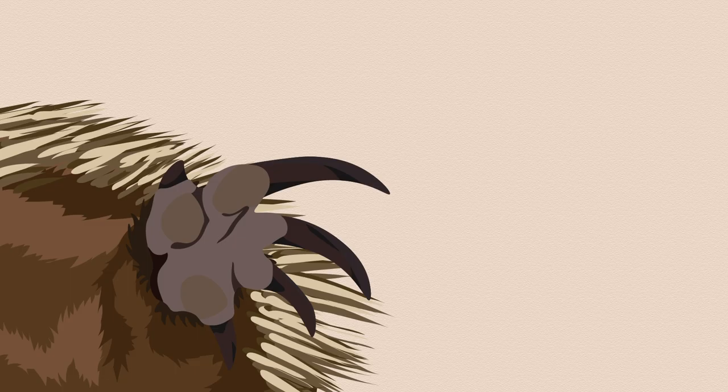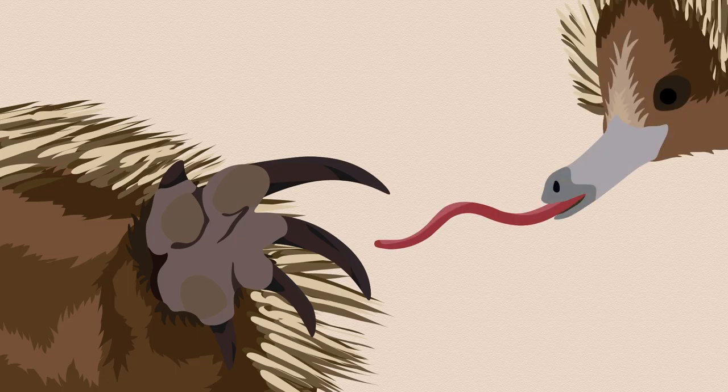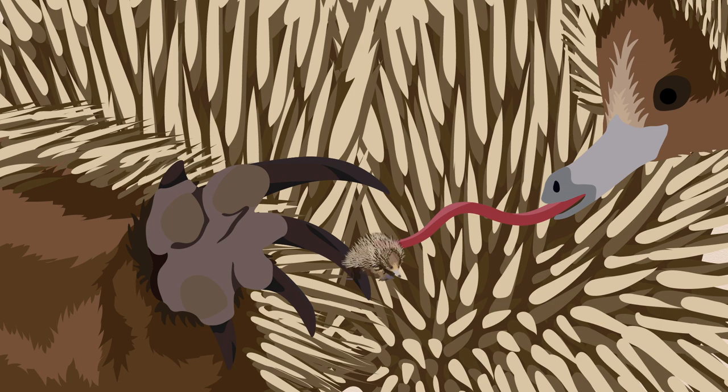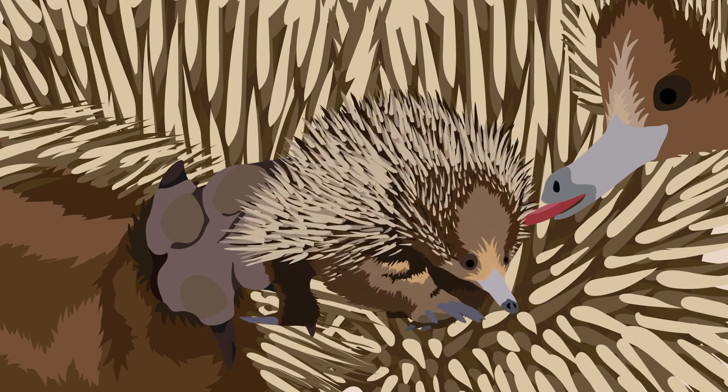With backwards facing feet, a long toothless snout and prickly back, echidnas are surely one of the oddest animals about.